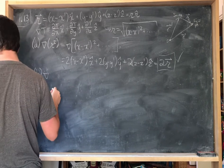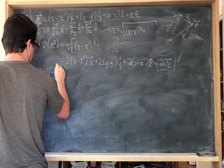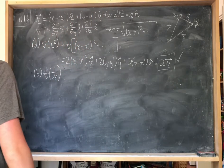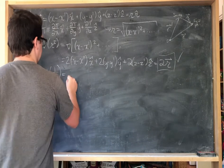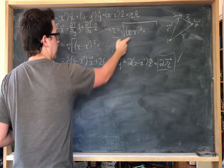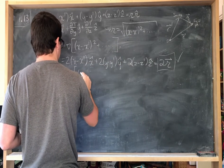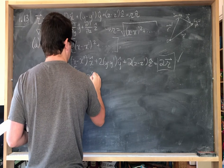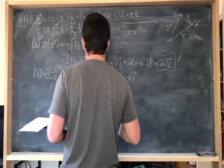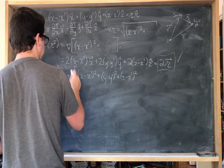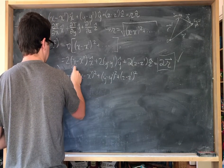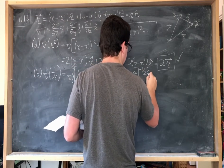Now we go on to part b, which asks us to show that the gradient of one over script r equals minus script r-hat over script r squared. We can rewrite this as the whole quantity (x minus x-prime)² plus (y minus y-prime)² plus (z minus z-prime)² — if it were just script r it would be to the one-half because it's square-rooted, but this is the inverse, so we write it as to the negative one-half.